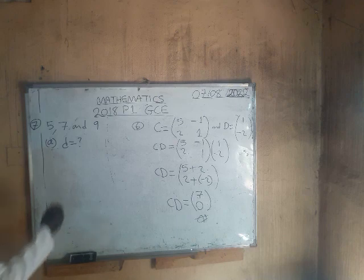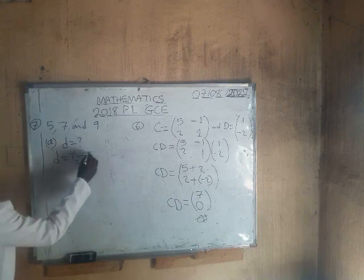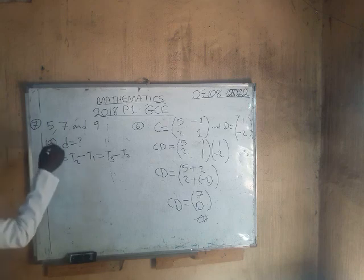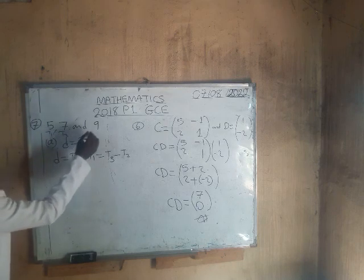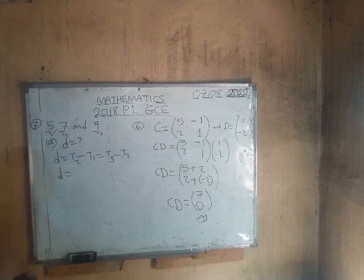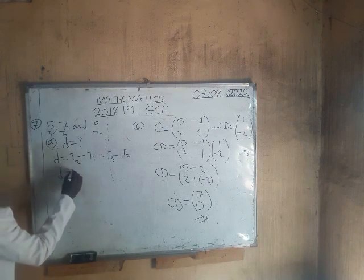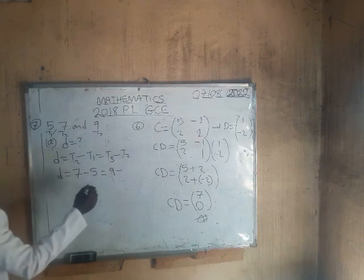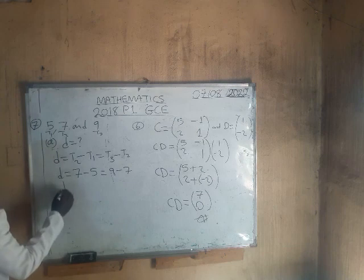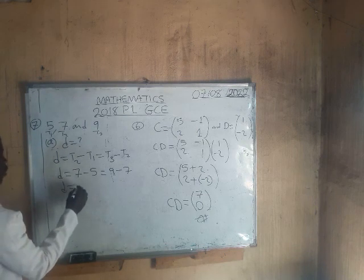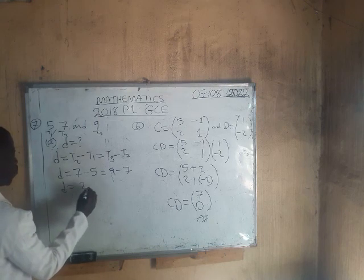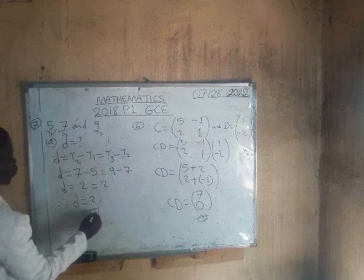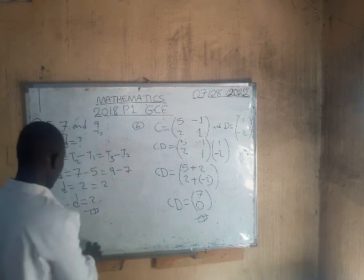Labeling the terms T1, T2, T3 as 5, 7, 9 respectively: the common difference equals T2 minus T1, which is 7 minus 5 equals 2. We verify: T3 minus T2 is 9 minus 7, which also equals 2. Therefore the common difference is 2.